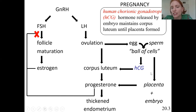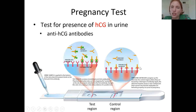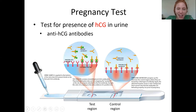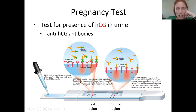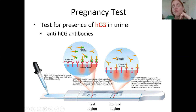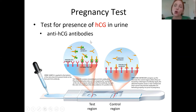Because HCG is only made when an embryo is present, you can use it during a pregnancy test. You pee on a stick, it absorbs into the test, and antibodies specific for HCG are present. If HCG is present, it will bind to those antibodies and create a color line. This is a very effective, reliable test because HCG will only be present if an embryo is present.